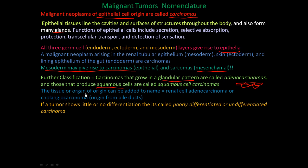The tissue or organ of origin can be added to the name. For example, renal cell adenocarcinoma tells you it's a renal cell with a glandular pattern of epithelial origin. Cholangiocarcinoma refers to a malignant tumor in the bile ducts from the epithelial tissue of the bile ducts. If a tumor shows little or no differentiation, it is called poorly differentiated or undifferentiated carcinoma.